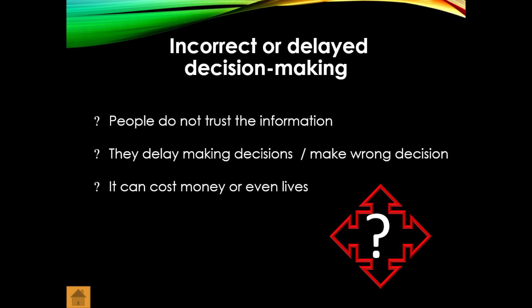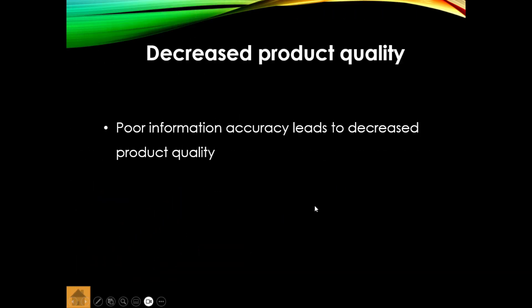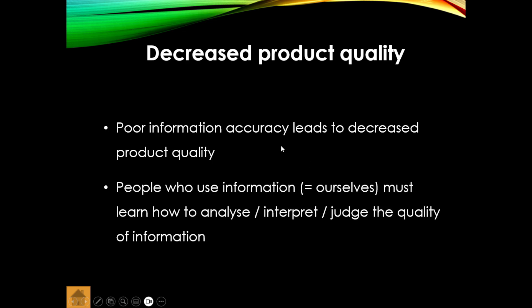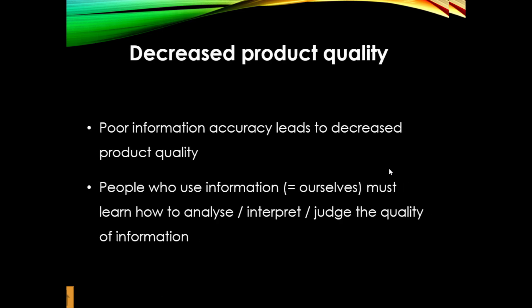It can cost money or in some cases even lives. Think about a spaceship — you want to launch with four people on board and get to the moon. Imagine the amount of data verification and validation required. If your data is wrong, it can cost people their lives. Poor information accuracy also leads to decreased product quality, and those who use the information must learn to analyze, interpret, and judge its quality.